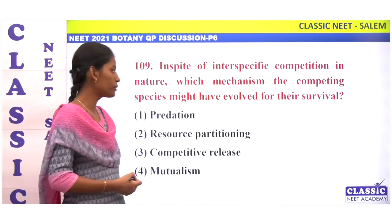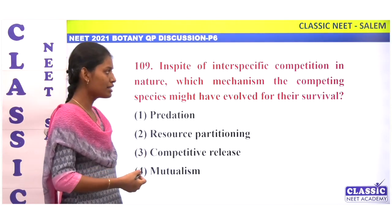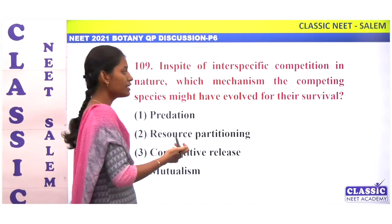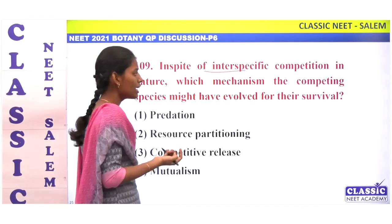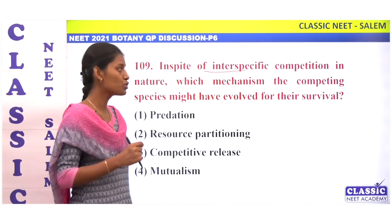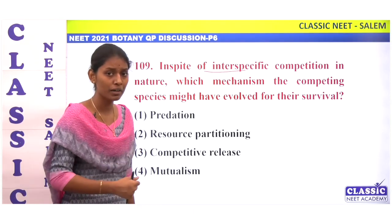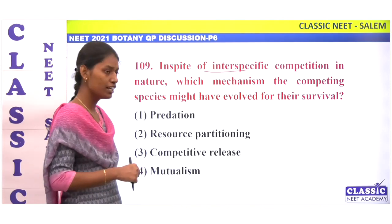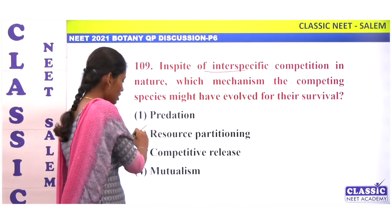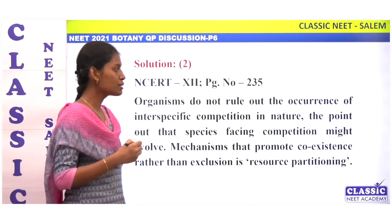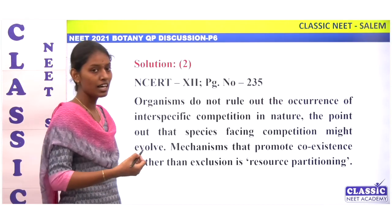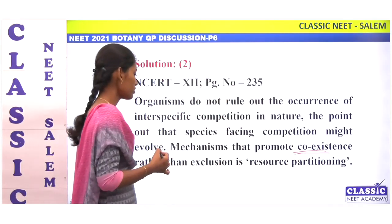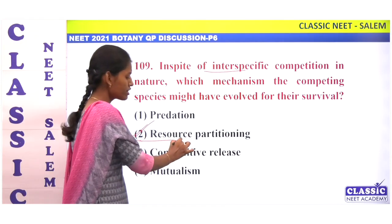In spite of interspecific competition in nature, which mechanism might competing species have evolved for their survival? The correct answer is resource partitioning. In interspecific competition, with the help of resource partitioning, organisms coexist. Option 2.